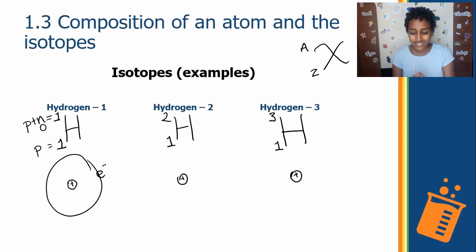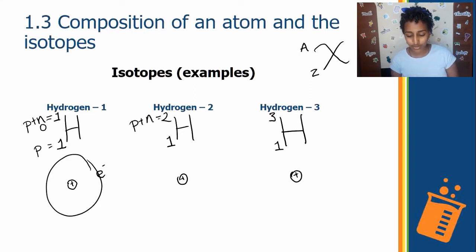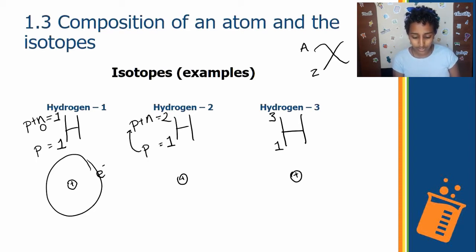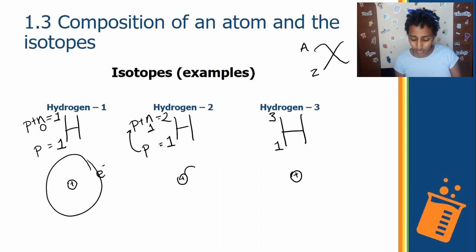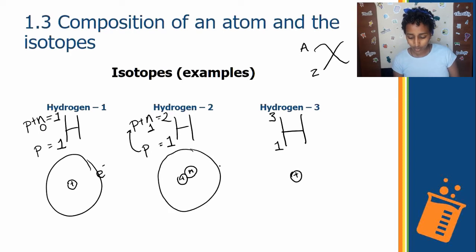In hydrogen-2, the mass number 2 equals protons plus neutrons, while the atomic number tells us there is 1 proton. Therefore, there must be 1 neutron, because 1 + 1 = 2. We represent this neutron with an N, and again there is an electron orbiting around the nucleus.